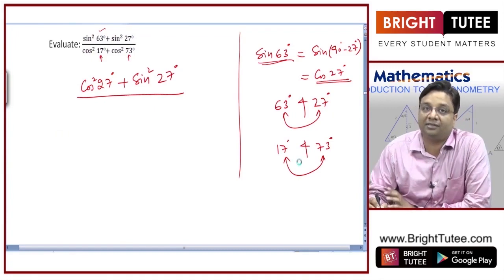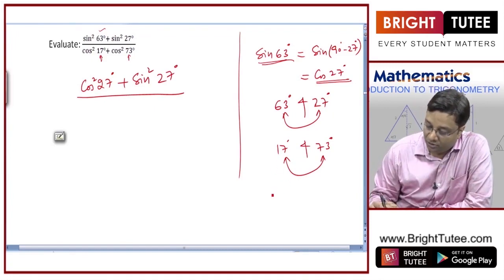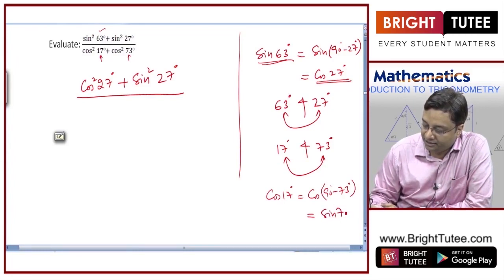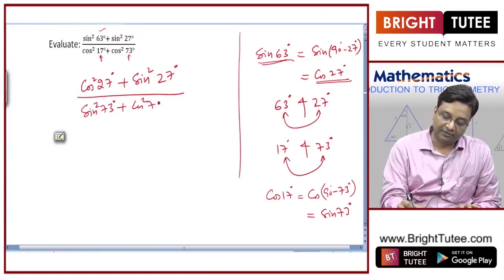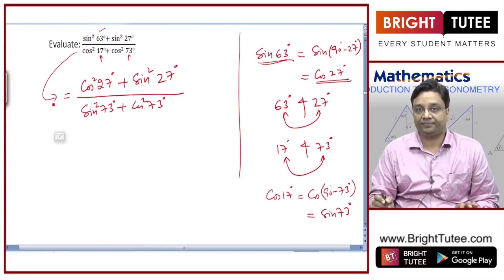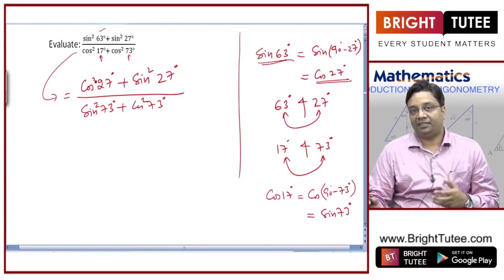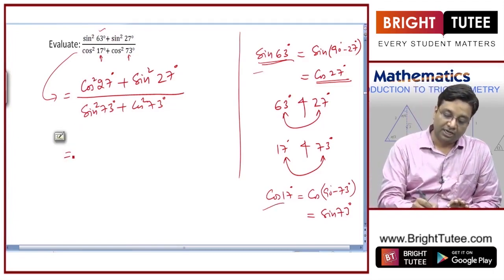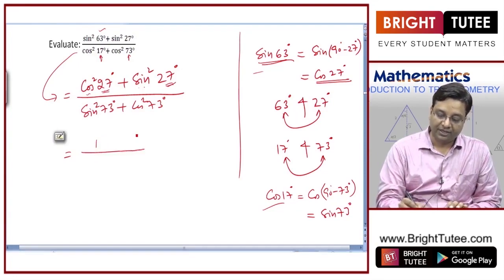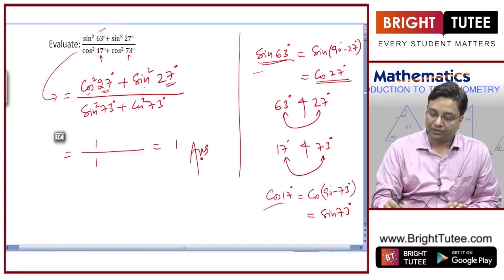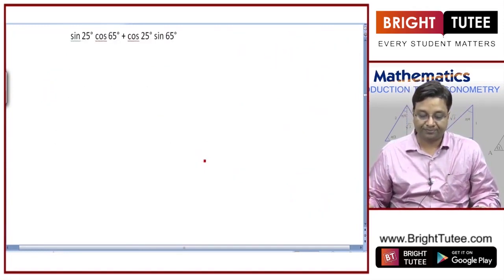Now look at the denominator: 17° and 73° are complementary since their sum equals 90°. So cos 17° equals cos(90° - 73°) which equals sin 73°. Replacing, the denominator becomes sin²73° + cos²73°. Both numerator and denominator are of the form sin²θ + cos²θ, which equals one. So the answer is one divided by one, equal to one.